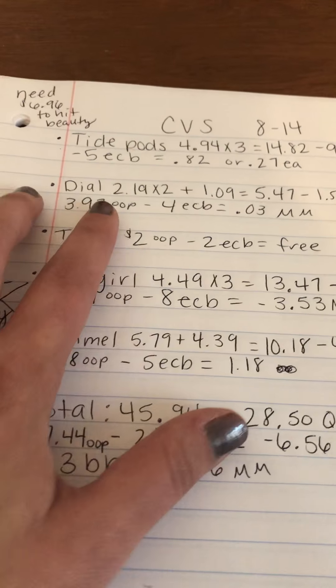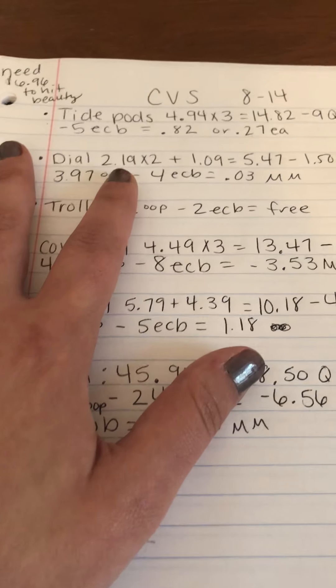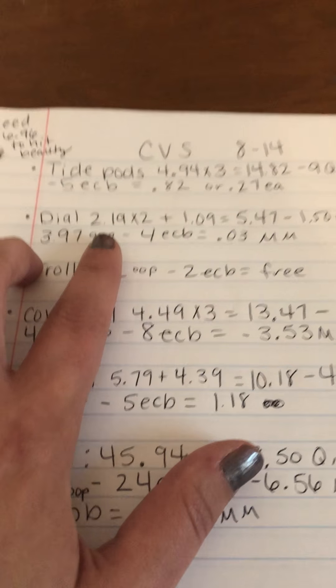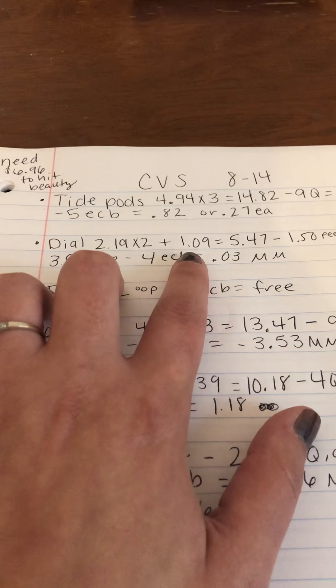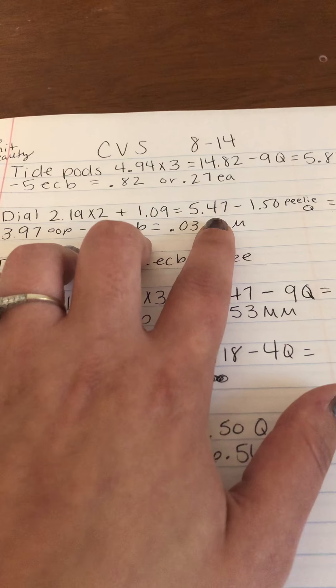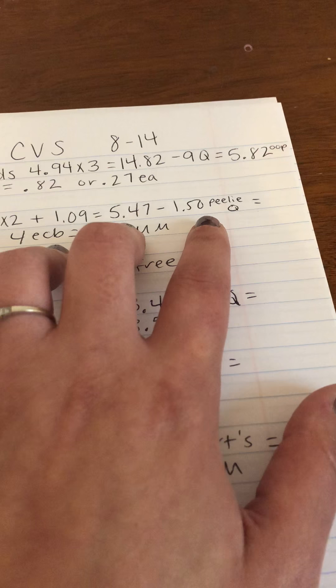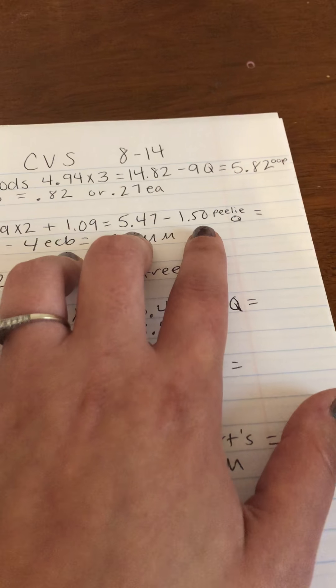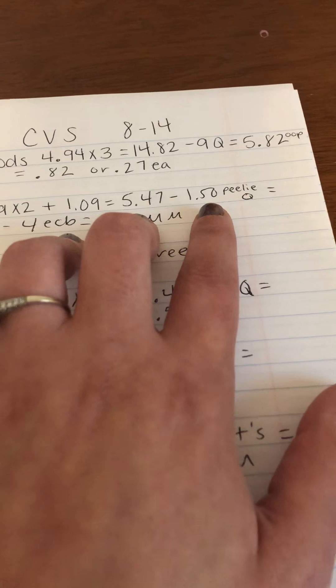I did the Dial deal. So they're buy one, get one half off, and buy three, get a $4 ECB. So I bought the regular Dial. Two of them were $2.19 and the third one rang up half price at $1.09. So that was $5.47. I had 50 cent pillies that I got from Kroger this morning that were on the Dial hand wash at Kroger and they scanned perfectly at CVS.